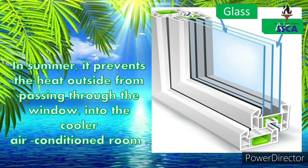Double glazed windows are not useful only in winter — they are useful in both summer and winter. In summer, it prevents the heat outside from passing through the window into the cooler air-conditioned room. So double glazed windows are useful in both seasons: they keep heat out in summer and keep warmth in during winter.